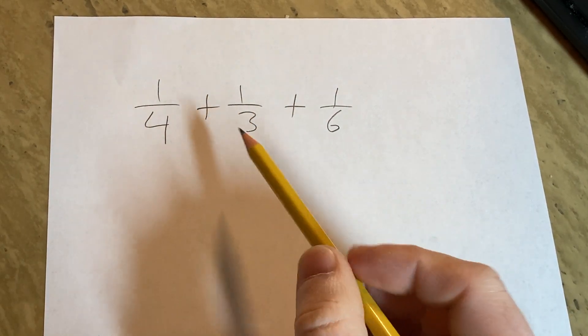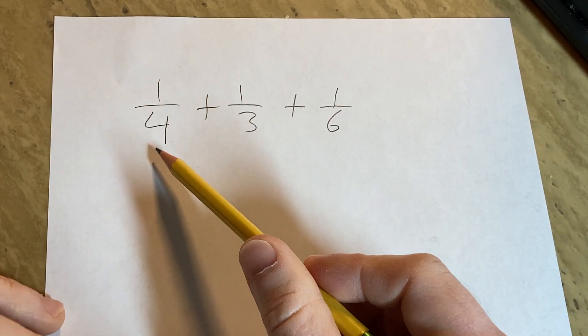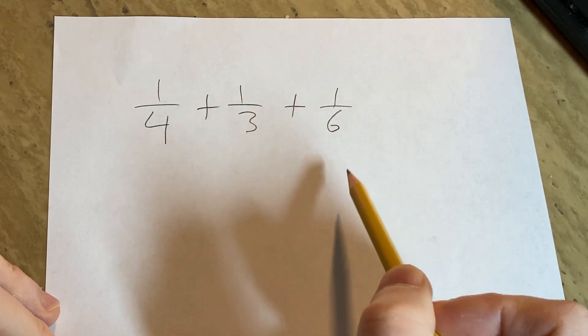In this problem, we are going to add three fractions. We have one-fourth plus one-third plus one-sixth.